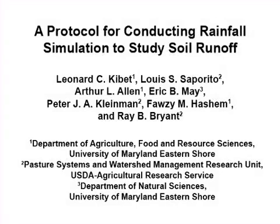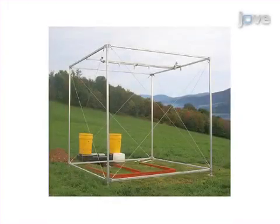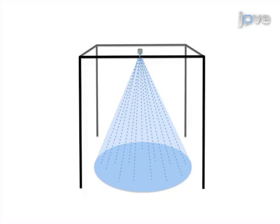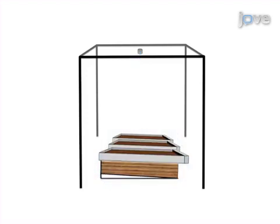The overall goal of this procedure is to simulate rainfall having a standard drop size, intensity, and uniformity across the target area to study soil runoff. This is accomplished by first adjusting rainfall simulator controls to achieve the approximate pressure and flow rate for the selected nozzle. The second step is to calibrate the rainfall simulator to achieve the exact flow rate for the selected nozzle and a uniform distribution of raindrops across the target area.